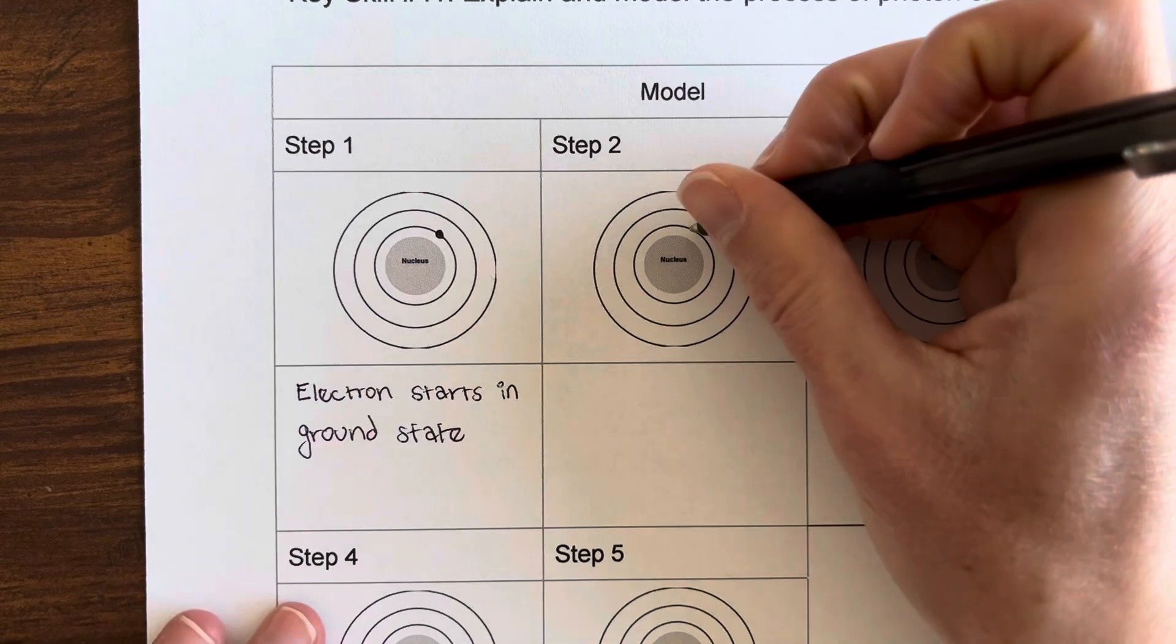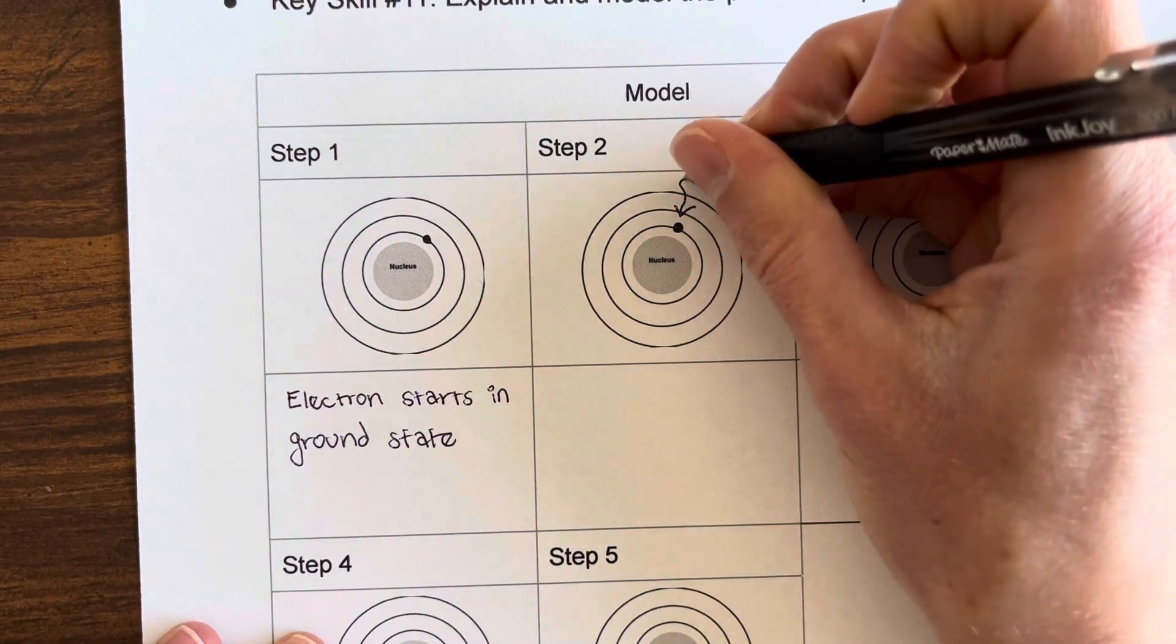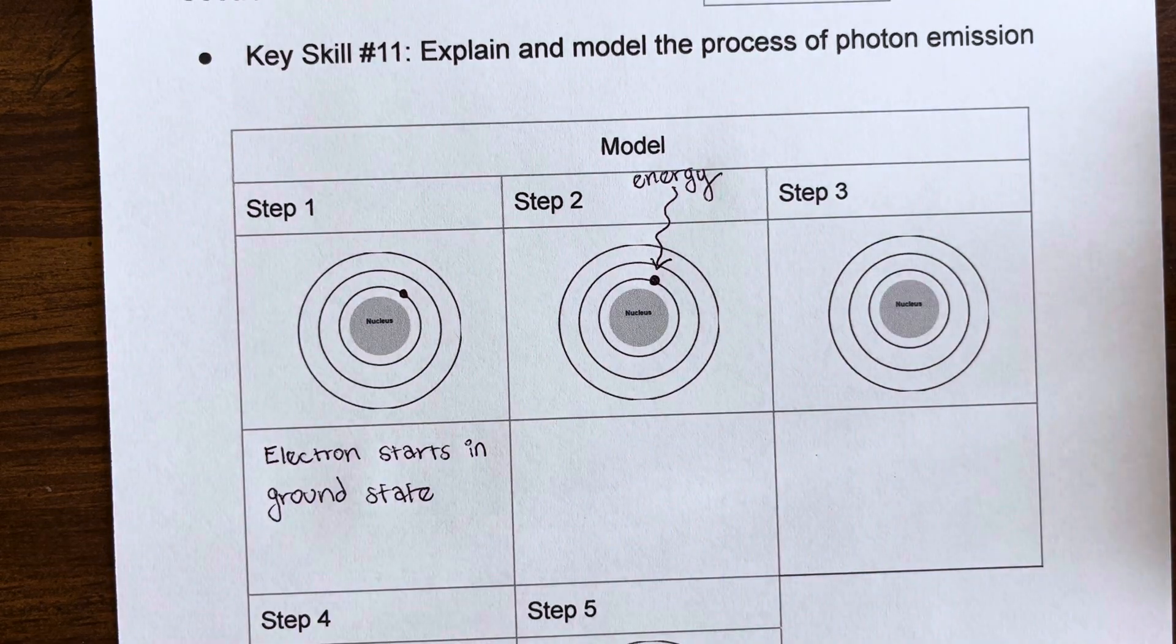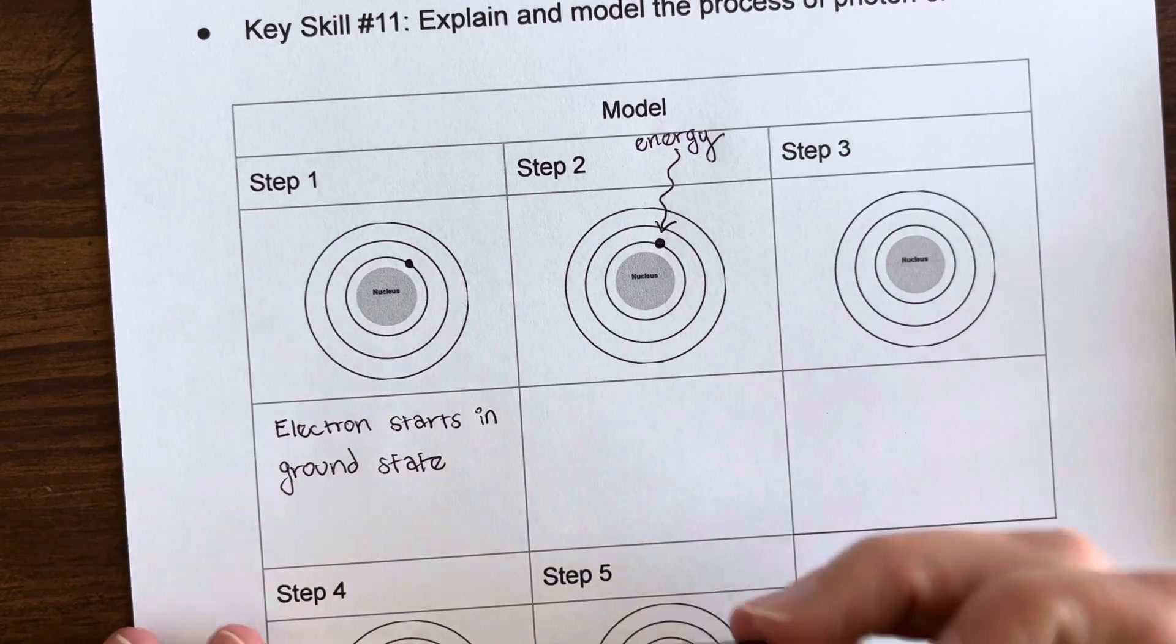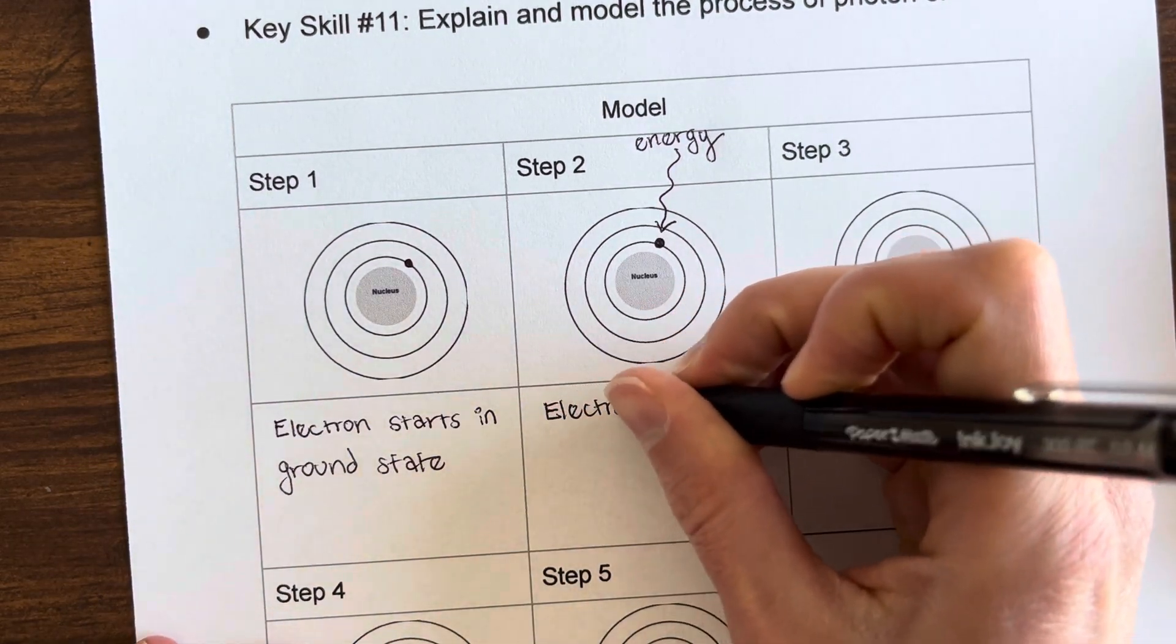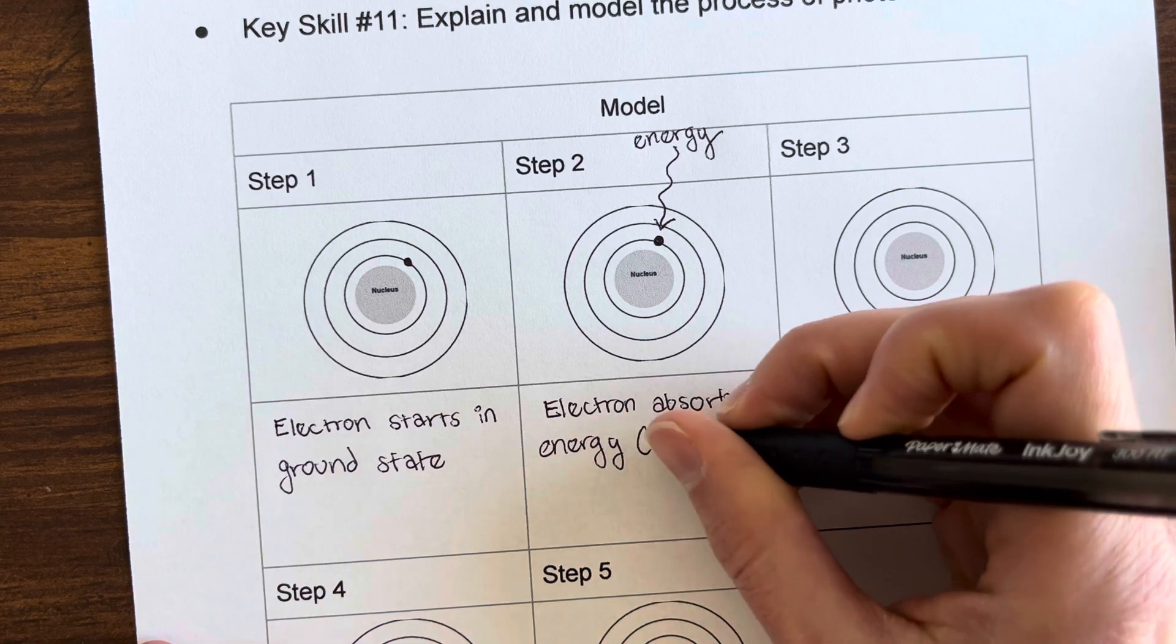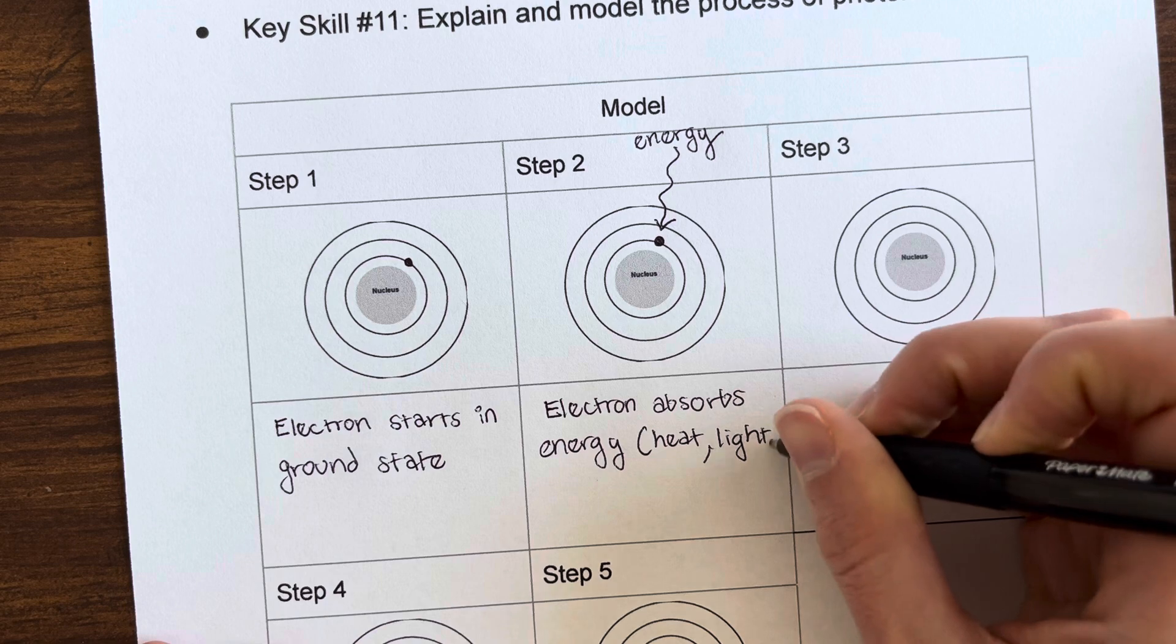All right, the next thing that's going to happen to our little electron here is it is going to absorb some energy. So we're going to draw a little squiggly arrow to represent energy, and that could be energy in the form of heat or electricity or a photon of light, any way this electron absorbs energy. So we'll just say electron absorbs energy, and that again could be heat, light, electricity.